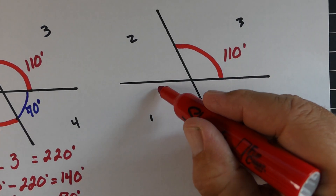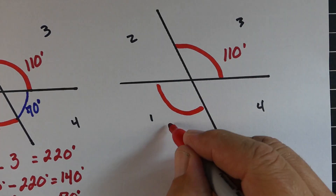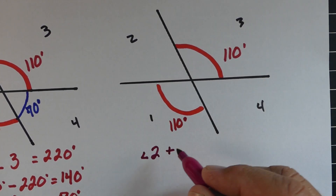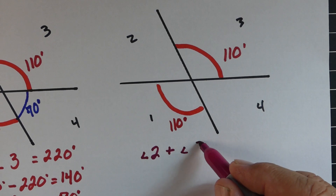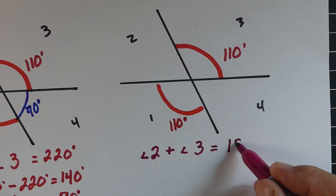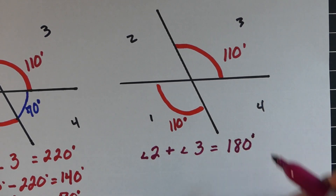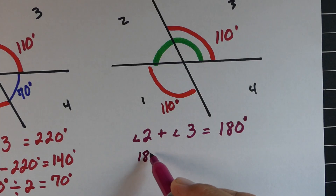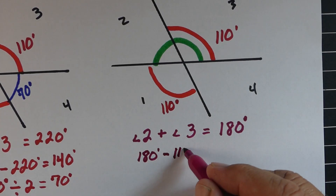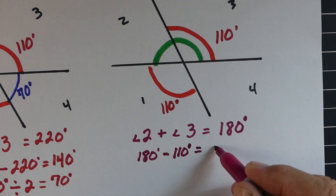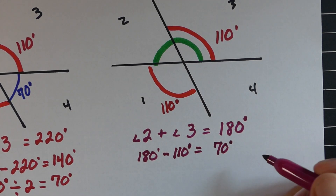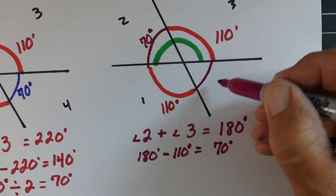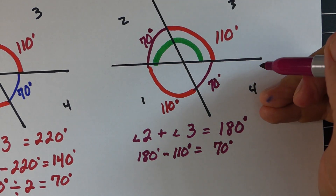Alright, here's our last example, and this is like option one from our earlier examples. We know the measurement of angle three is 110, so the measurement of angle one is also 110. We know that angles two and three together are going to equal 180. So just take 180 minus the 110 we know, and it gives us 70 degrees. That means angle two would have to be 70. And if two is 70, angle four is also 70 degrees.